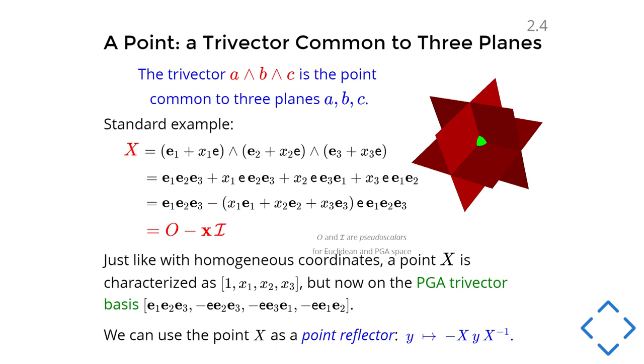Now there's two special things in here. This is the product of the three coordinate planes. We are in 3D. And there's the product of the three coordinate planes and the plane at infinity. These will occasionally occur in the rest of my presentation. We'll call this O because it's the point at the origin, obviously when X equals zero. And we call this I. That's a common term for the biggest element that you can make in a space, the pseudoscalar. But in here you see that on a somewhat weird basis, this one, this one, this one, and this one, this point just has the coordinates 1, X1, X2, X3.